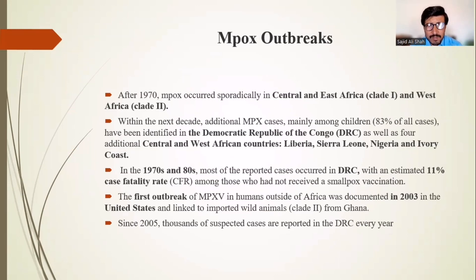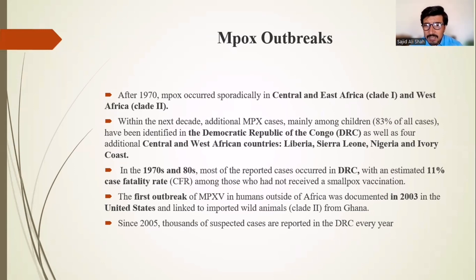After 1970, mpox occurred sporadically in Central and East Africa, caused by clade one, and in West Africa, caused by clade two. Within the next decade, additional cases — mainly among children — about 93 percent of all cases were identified in the Democratic Republic of Congo, as well as Central and West African countries including Nigeria, Sierra Leone, Liberia, and Ivory Coast. In the 1970s and 80s, most reported cases occurred in the DRC, with an estimated 11 percent case fatality rate among those not vaccinated against smallpox.